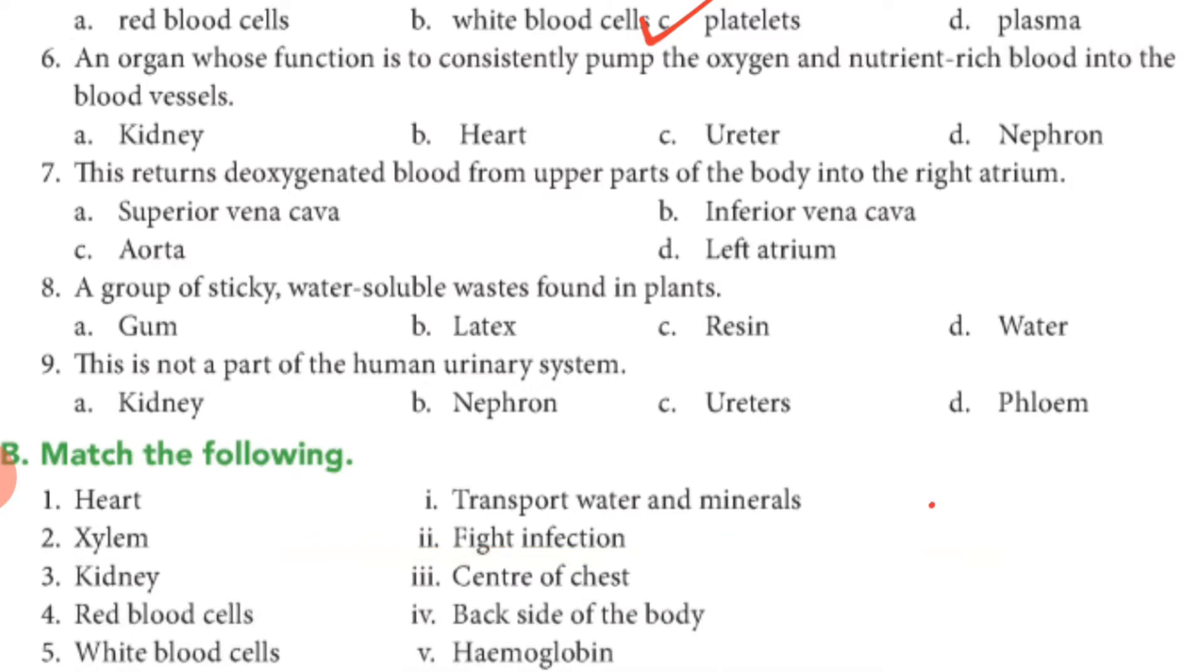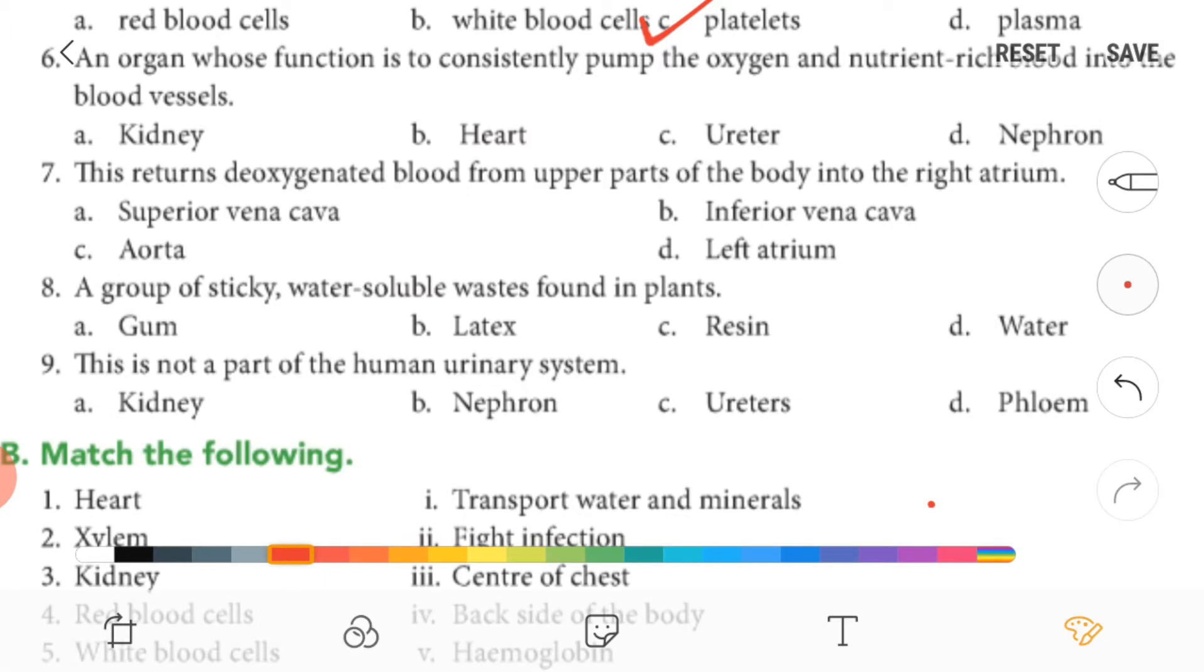Now sixth one, an organ whose function is to consistently pump the oxygen and nutrient-rich blood into the blood vessels—the answer is heart.